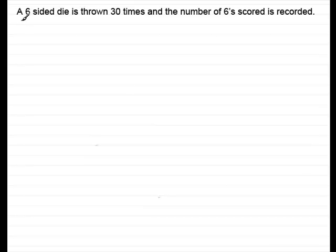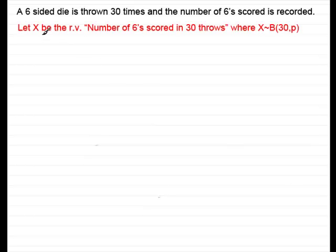And what I've got here is a six-sided die is thrown 30 times, and the number of sixes scored is recorded. And this is clearly a binomial model. We've got a finite number of trials, and the probability of getting a six is always going to remain constant and independent. So let's start by defining a random variable x. So let x be the random variable number of sixes scored in 30 throws, where x is distributed binomially 30 trials, and the probability of getting a six, p, is written here.